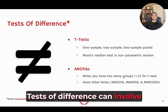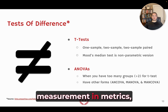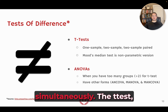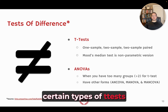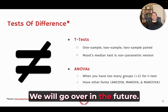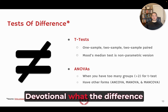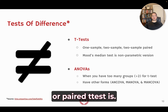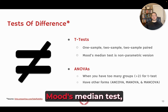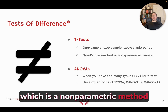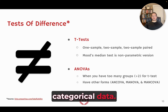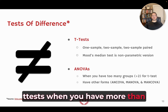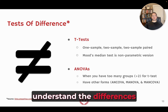Tests of difference can involve different combinations of measurement in metrics — you can have continuous and categorical data simultaneously. We will go over in a future devotional the difference between a one-sample, two-sample independent, and two-sample dependent or paired t-test. I'll also cover Mood's median test, which is a non-parametric method for categorical data, and ANOVAs, which are an extension of t-tests when you have more than two groups whose differences you're trying to understand.